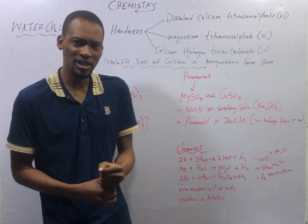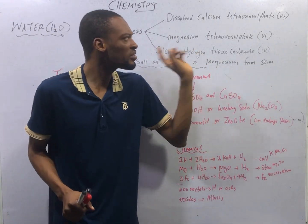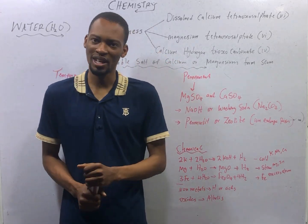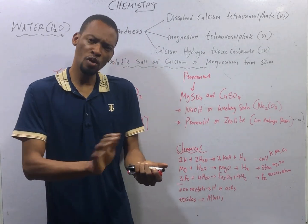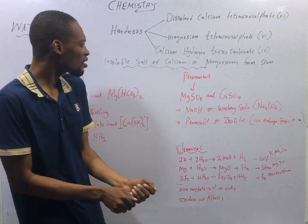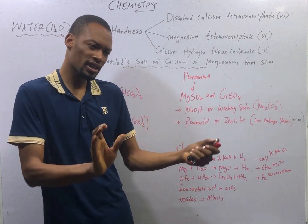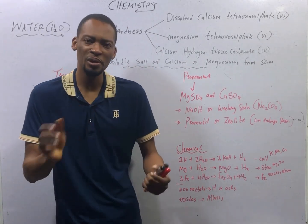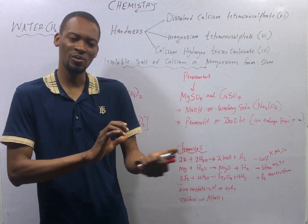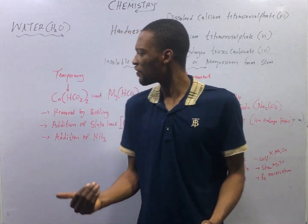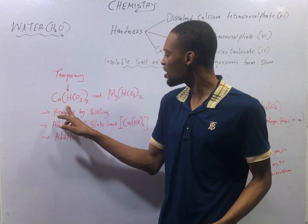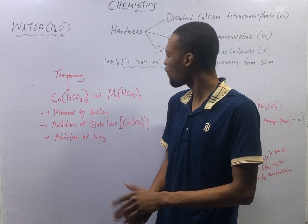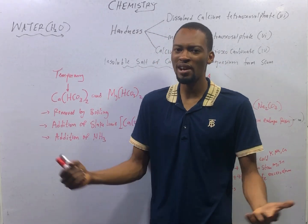Hardness in water is caused by the presence of dissolved calcium sulphate, magnesium sulphate, and calcium hydrogen carbonate — Ca(HCO₃)₂ and Mg(HCO₃)₂. When you put soap in hard water, the soap reacts with the salts in the water to form insoluble salts of calcium or magnesium, resulting in the formation of scum and preventing the water from lathering. The causes of temporary hardness are Ca(HCO₃)₂ and Mg(HCO₃)₂.